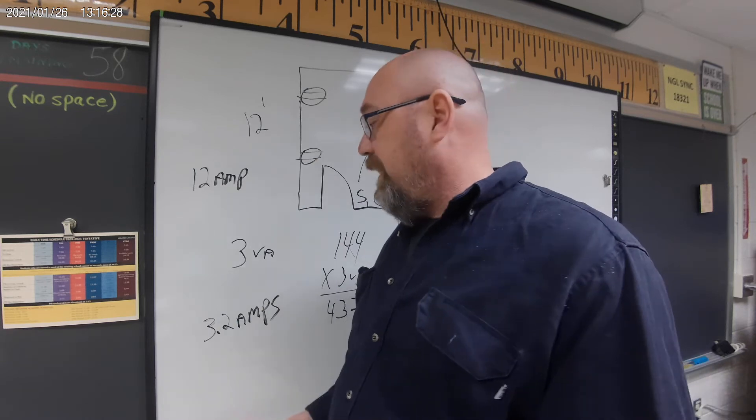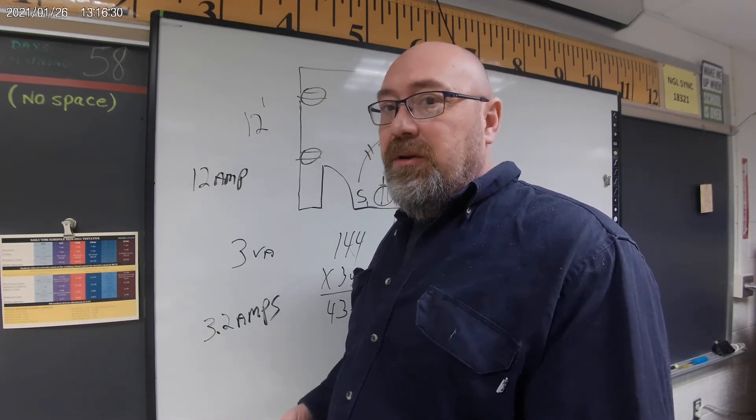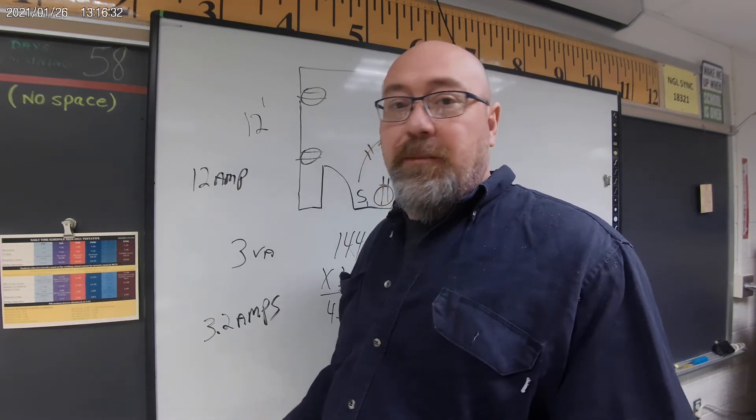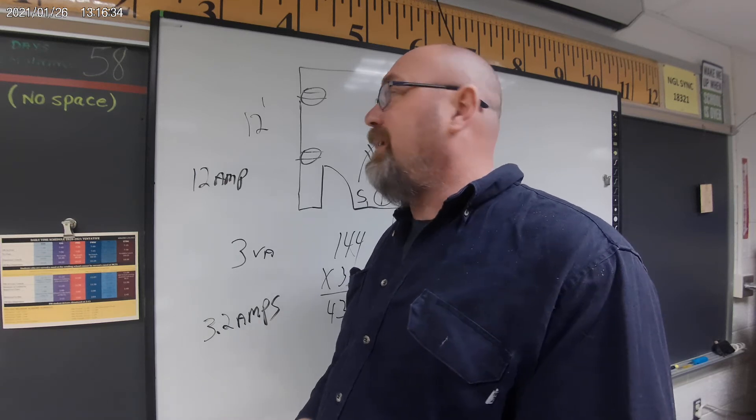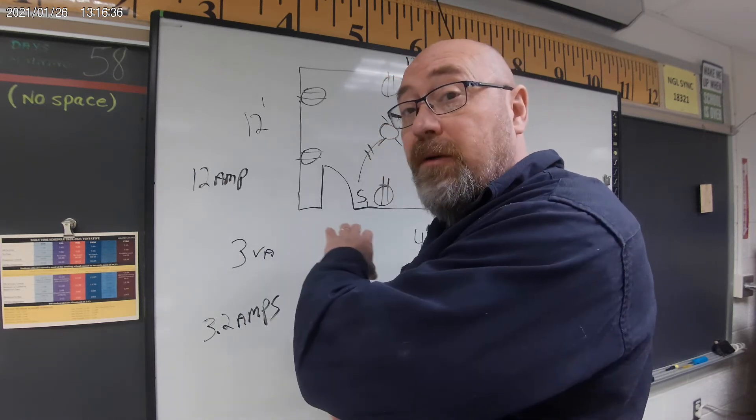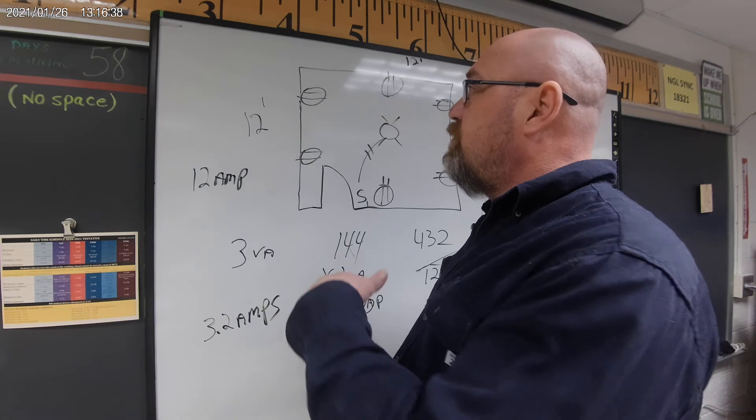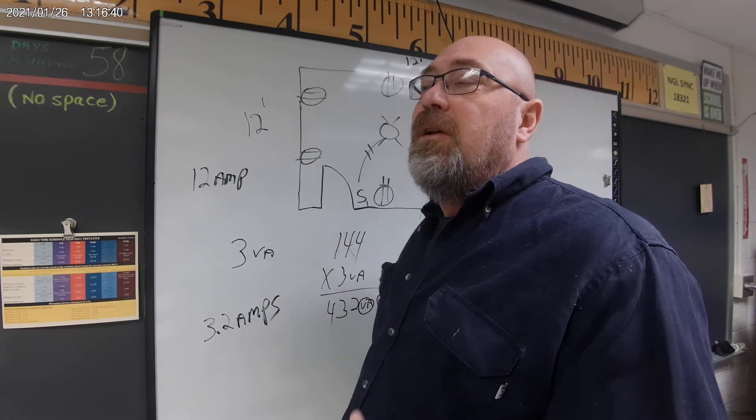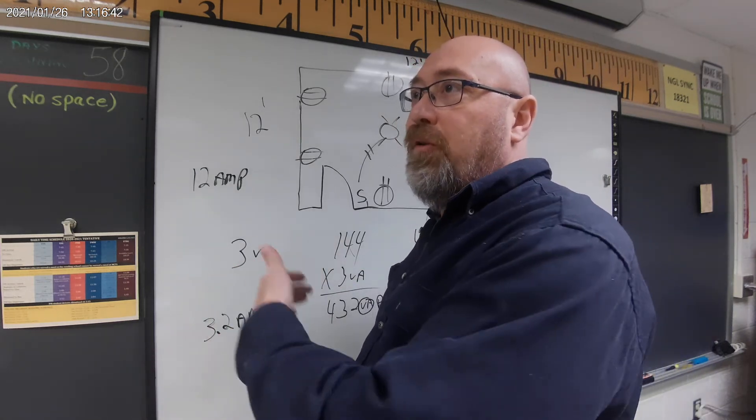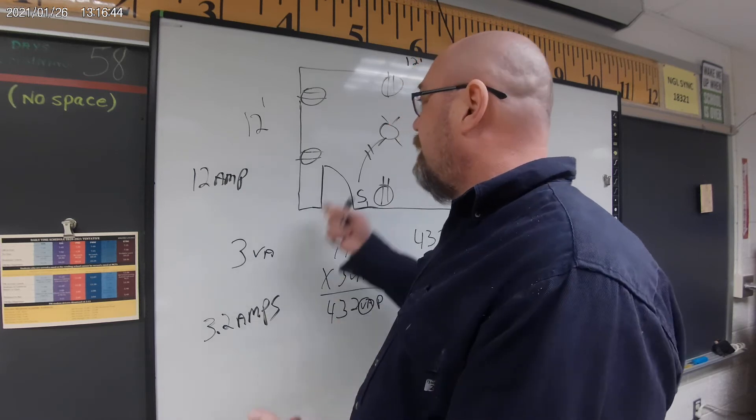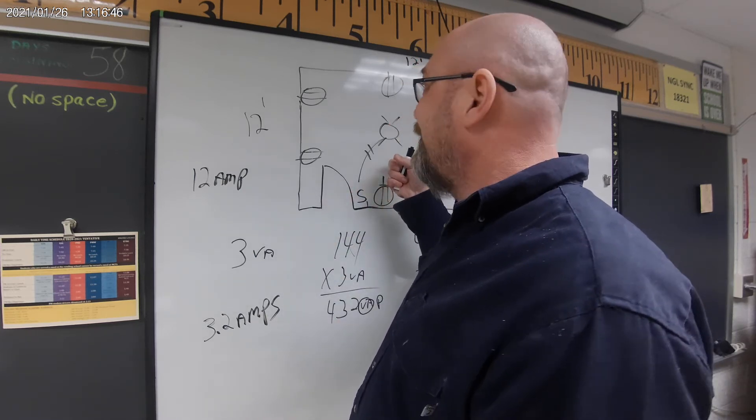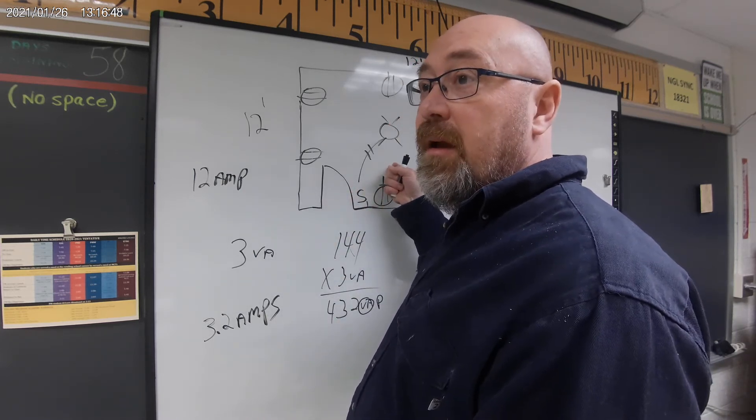If I had two 12 by 12 bedrooms, I could easily put those both on the same circuit because we're drawing less than seven amps for those two bedrooms. The preferred method is no more than eight devices on a circuit. If I have these bedrooms and they're exactly the same, I have 16 devices on a circuit.